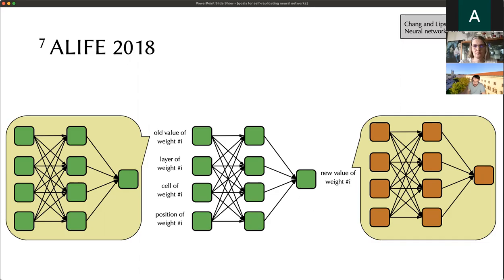It's very improbable that it would be an identity function. We end up with some different weights and a slightly different network as output. But of course, and this is what Chang and Lipson aimed for, there are networks that represent this property: networks where if I input their own weights, their output is their own weights again. This is what we call a self-replicating neural network.